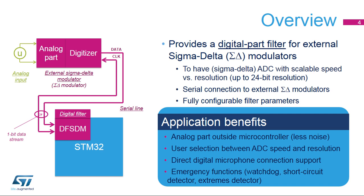The DF-SDM integrated inside STM32 products provides the digital part of the complete sigma-delta ADC with an external analog part, which is the sigma-delta modulator. Both parts are connected through the serial interface, which provides a 1-bit sigma-delta stream. The average value of this stream represents the analog value on input. Applications can benefit from the easy connection — just one or two wires are needed. Thanks to the analog being located outside the microcontroller, there is less noise. The balance between speed and resolution can be set by configuring the digital filter.